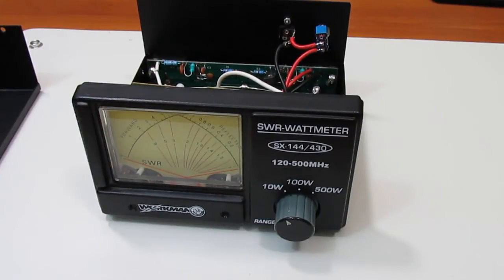Hey YouTube, this is going to be a quick rant on crappy amateur radio equipment. What you see here is a Workman SWR and wattmeter. It allegedly operates between 120 and 500 megahertz.